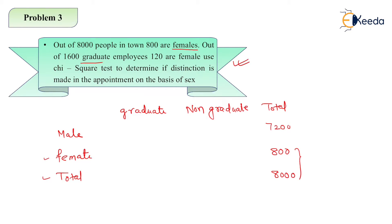Total graduates are 1600. 120 are female, so 1600 minus 120 equals 1480 are male. Total is 7200, out of which 1480 are graduate, so 7200 minus 1480 gives non-graduate which is 5720. This minus this you will get 680, and lastly you will get 6400. This is your table ready. You have to have two rows and two columns because total we don't count.